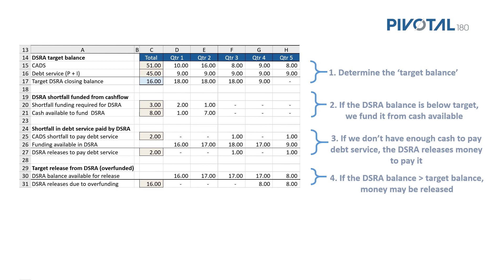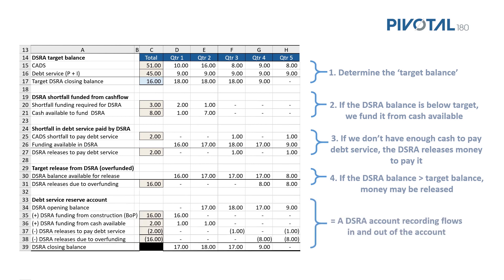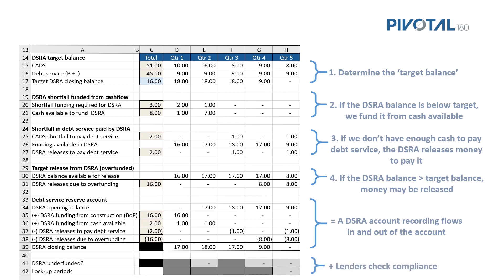From a best practice standpoint, we need to record a volume of cash over time, so we build a control account. Finally, lenders will want to check that the DSRA is in compliance with any agreements, so we need to add some checks. Now that we understand the main elements of the calculations, we can move into the next module and learn how to calculate the target balance.